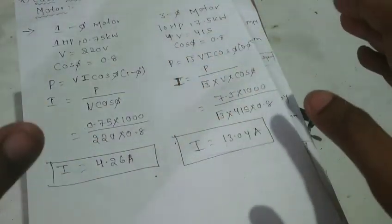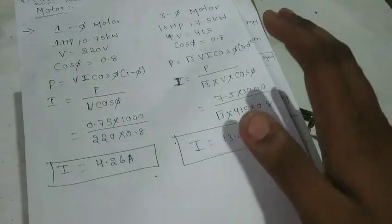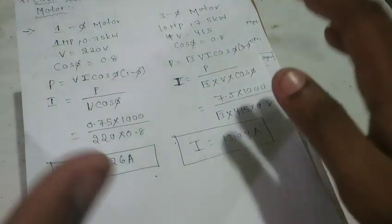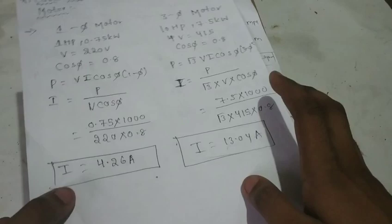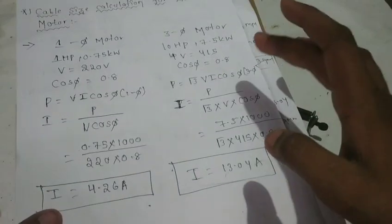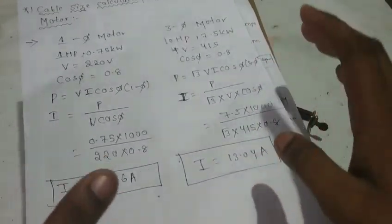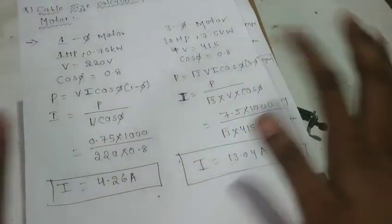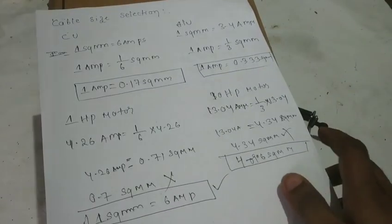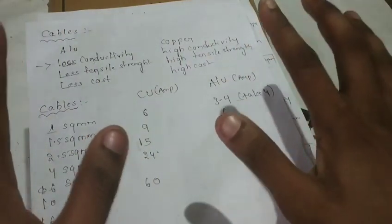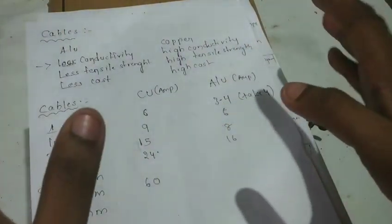The solution is clear. First of all, for cable size calculation we need the motor rating full load current. Here we have the 1HP motor rating full load current and the 10HP motor rating full load current. So this is I1.